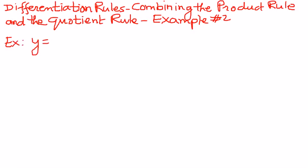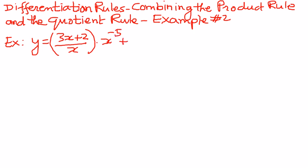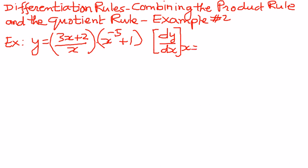If y is equal to (3x + 2) divided by x, times (x to the power of negative 5 plus 1), we want to find the derivative dy/dx of this function with respect to x at x equals 1. We first find the derivative and then substitute the value x equals 1.